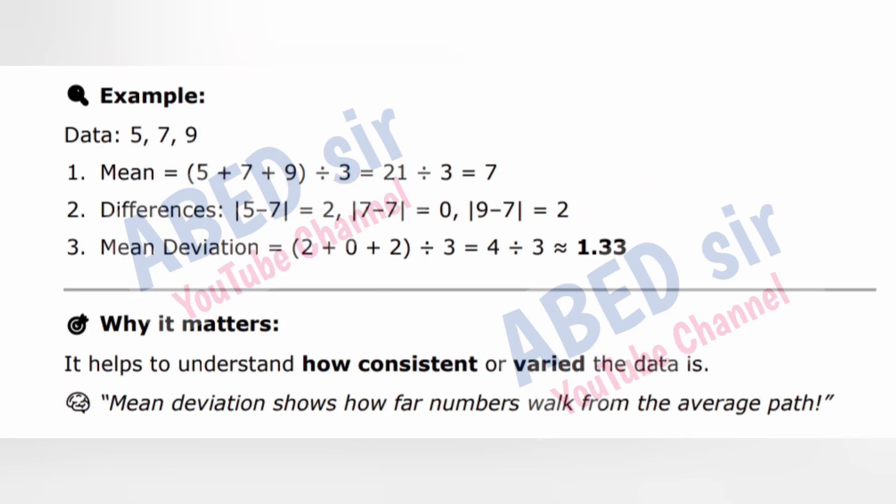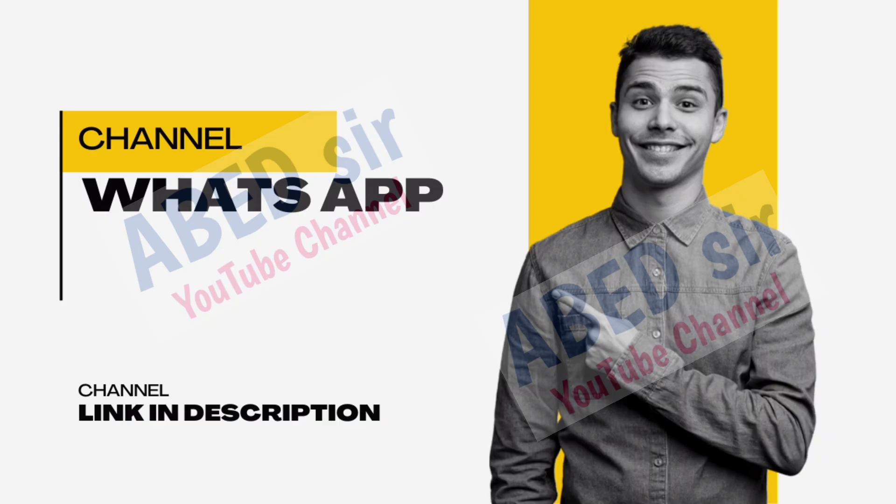Example — Data: 5, 7, 9. Mean = (5 + 7 + 9) / 3 = 21 / 3 = 7. Differences: |5−7|=2, |7−7|=0, |9−7|=2. Mean deviation = (2 + 0 + 2) / 3 = 4/3 ≈ 1.33. Why it matters: it helps to understand how consistent or varied the data is. Mean deviation shows how far numbers walk from the average path.